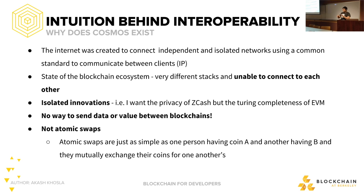This is very different from atomic swaps. Atomic swaps are simply: I have Bitcoin, you have Zcash, I want Zcash, you want Bitcoin — let's swap them simultaneously so neither of us can get cheated. Atomic swaps are great and useful, but I consider that more in the realm of decentralized exchanges. That's kind of what ILP and similar things are built around.